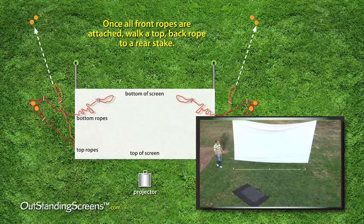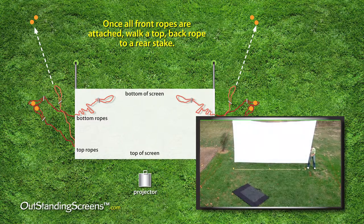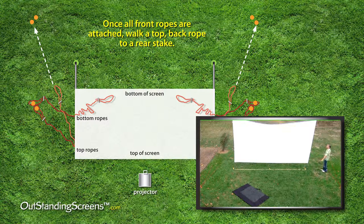At this point you have a semi standing screen. Loop the two remaining back ropes onto the last two back stakes.